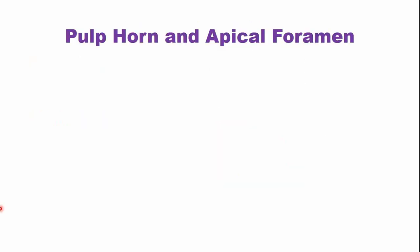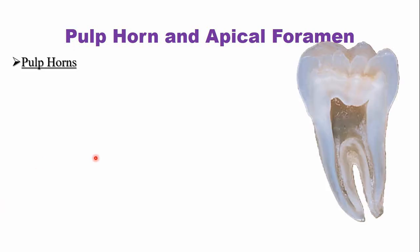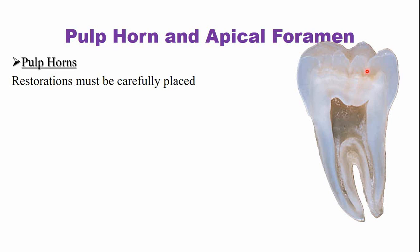Other important terms are the pulp horn and the apical foramen. The pulp horn is the extension of the pulp chamber below the cusps or the incisal edges. You can see these are the pulp horns. Restorations must be carefully placed in these areas because during the placement of restoration these pulp horns can be exposed.